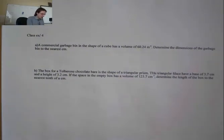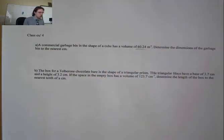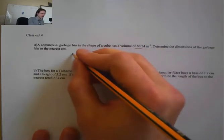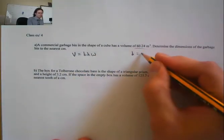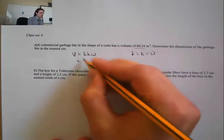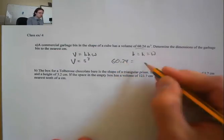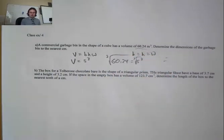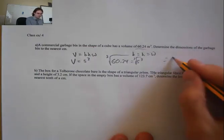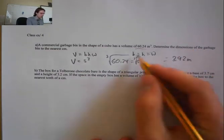Class example 4: a commercial garbage bin shaped as a cube has a volume of 60.24 m³. Determine the dimensions to the nearest centimeter. Volume of a cube = side³, so 60.24 = side³. Taking the cube root of both sides gives 3.92 meters, or 392 centimeters.